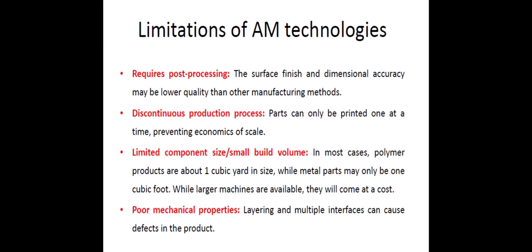Requires post processing: every manufacturing process requires post processing, and the surface finish and dimensional accuracy may be lower quality than other manufacturing methods. Discontinuous production process: parts can only be printed one at a time, preventing economies of scale. Continuous production is not possible in additive manufacturing.